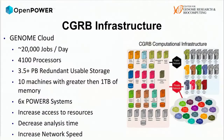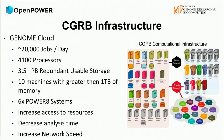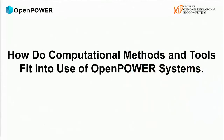The center currently runs about 20,000 jobs a day. We have closer to 5,000 processors at this point. We're over 4 petabytes of usable redundant storage. We generate 4 to 8 terabytes of data a day from different groups. We have lots of machines with greater than a terabyte of RAM because that helps us change the scope. We have six Power systems, and we are continuing to buy them.